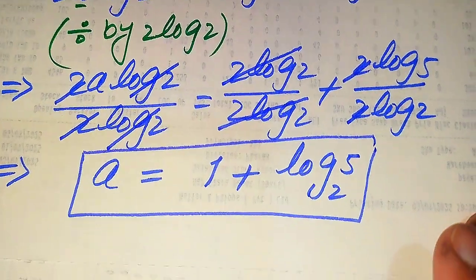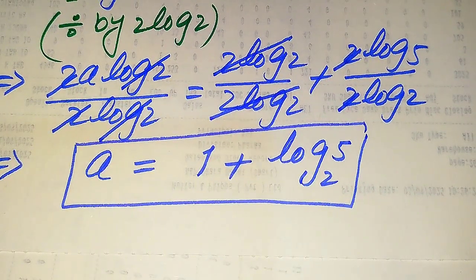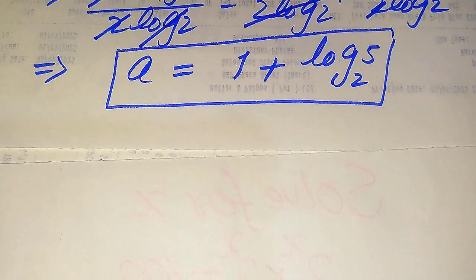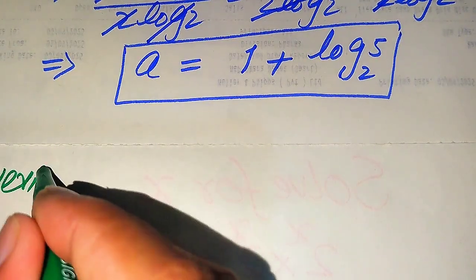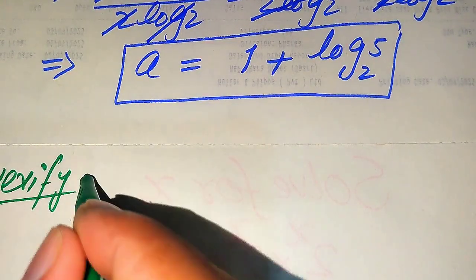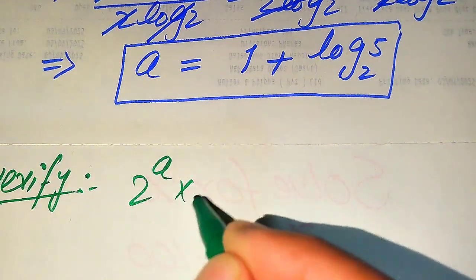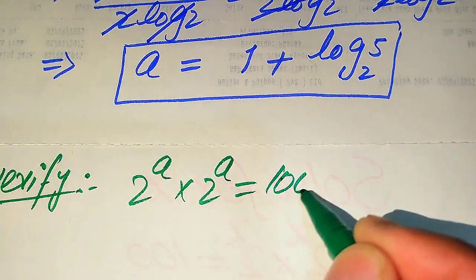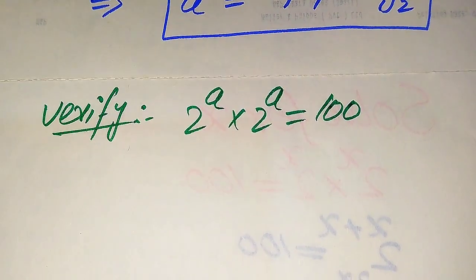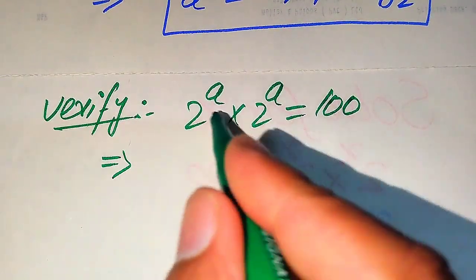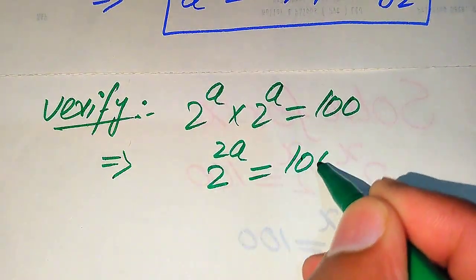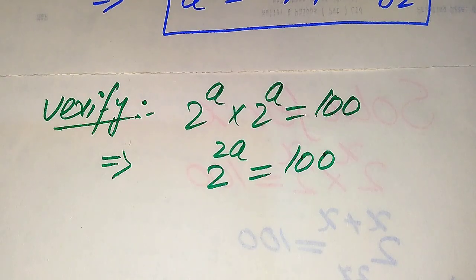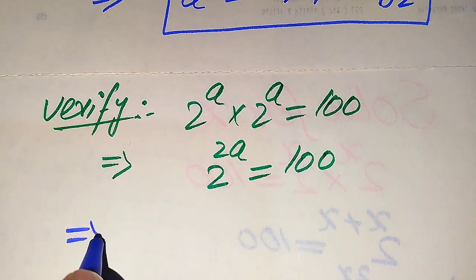Now we verify whether this value of a satisfies the original equation. We copy down the given statement: 2 to the power of a multiplied by 2 to the power of a equals 100. We first simplify by adding the exponents to get 2 to the power of 2a equals 100, and now we substitute the value of a.